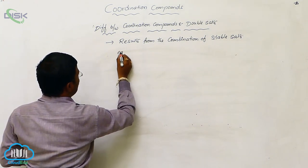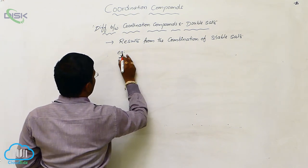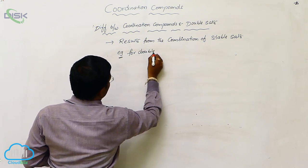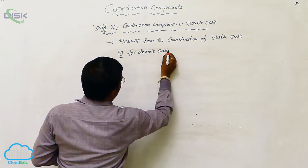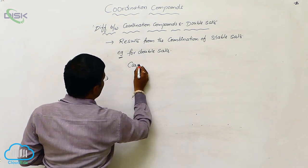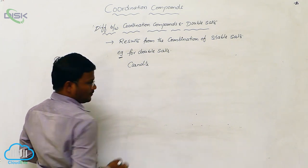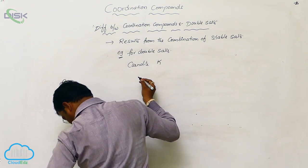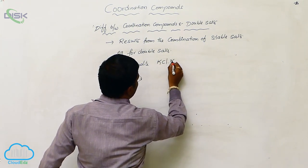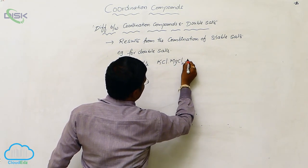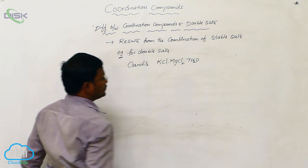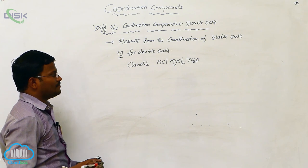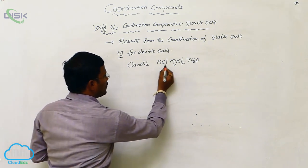Let us look at examples of double salts. The first example is carnalite, with the molecular formula KCl·MgCl₂·7H₂O. This is called a double salt.